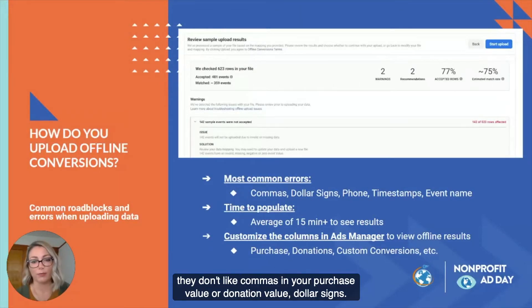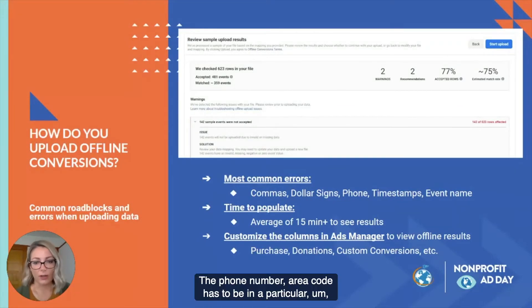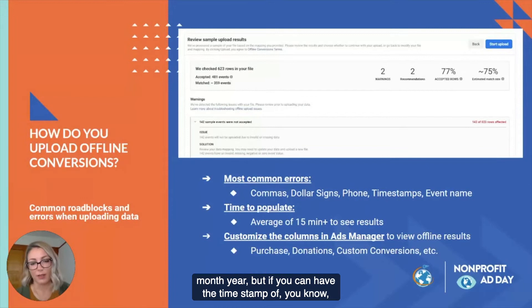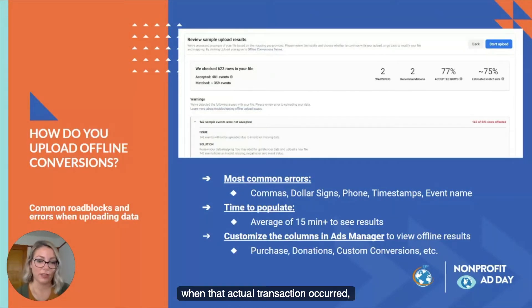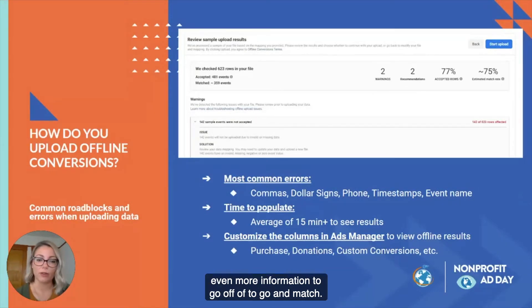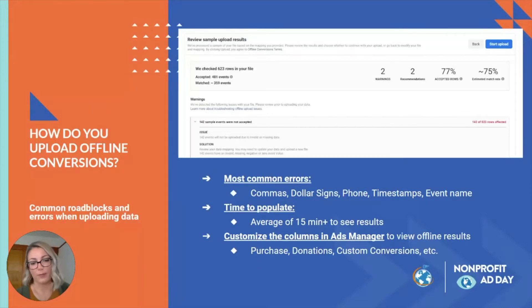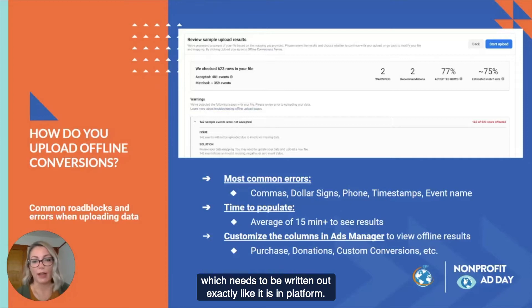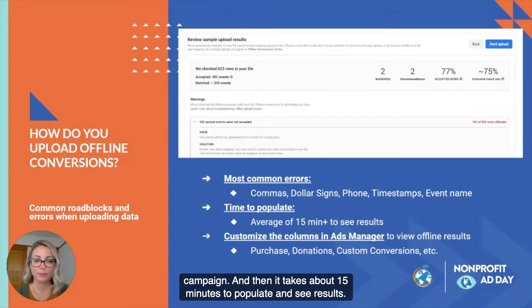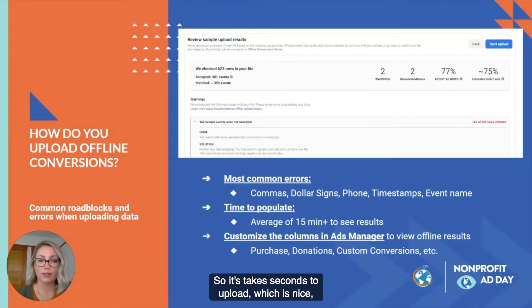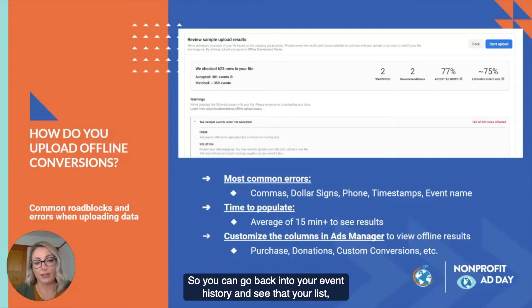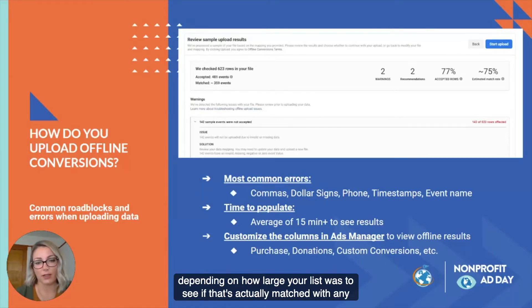Common errors include commas in your purchase or donation value, dollar signs, phone number area codes in the wrong format, and timestamp formatting. If you can include the timestamp down to the minutes and seconds of when the transaction occurred, that's even better because it gives Facebook more information to match with. Your event name needs to be written out exactly as it appears in platform — whether that's donate, purchase, or a custom conversion written exactly as it is in the campaign. After uploading it takes about 15 minutes to populate. You can check your event history to confirm the list uploaded and then come back to see if it matched any offline purchases.